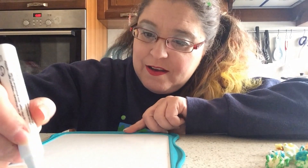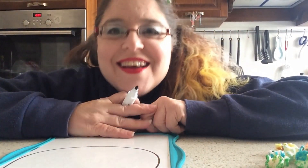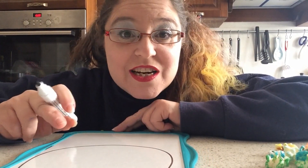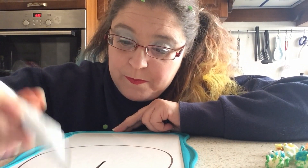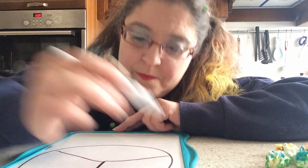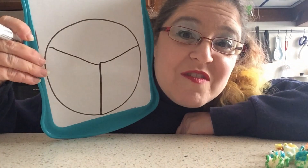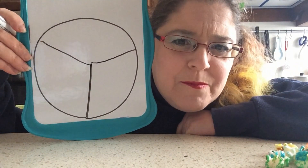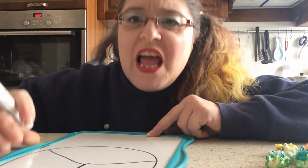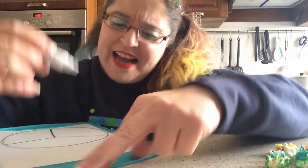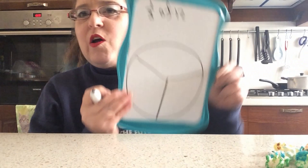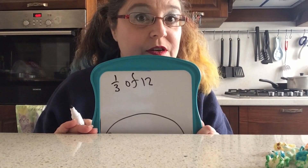The first thing I'm going to do is draw a circle on my whiteboard, nice and big. Then I'm going to divide that circle into thirds. Now remember, when we're drawing thirds each piece should be the same size. Now, what if I want to find out one-third of twelve? How do I do it?